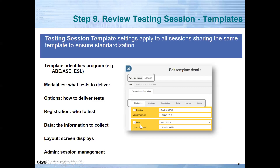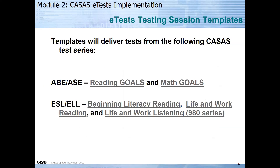Registration is who you are going to test. Martha will be showing you these tabs and their functionality. The templates will deliver tests for ABE — Reading Goals and Math Goals — and for ESL/ELL: beginning literacy reading, life and work reading, and life and work listening. It's important to note you must pre- and post-test in the same series. You cannot mix and match test forms or test series.